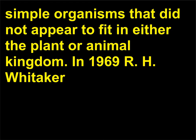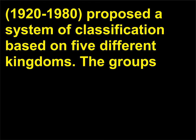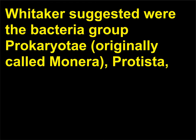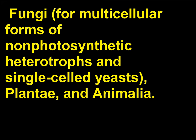In 1969, R.H. Whittaker (1920–1980) proposed a system of classification based on five different kingdoms. The groups Whittaker suggested were the bacteria group Prokaryotae (originally called Monera), Protista, Fungi (for multicellular forms of non-photosynthetic heterotrophs and single-celled yeasts), Plantae, and Animalia. This classification system is still widely accepted.